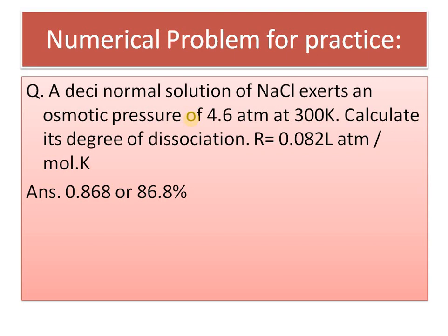Next is a numerical problem for practice. A decinormal (0.1 M) solution of NaCl has an osmotic pressure of 4.6 atmospheres. Calculate the degree of dissociation. NaCl is an electrolyte so the i-factor applies. Using π = i·C·R·T where C = 1/10 and π = 4.6, with temperature and R given, calculate i. Then use alpha = (i − 1)/(n − 1) to get alpha. Try this yourself and check the solution if required.